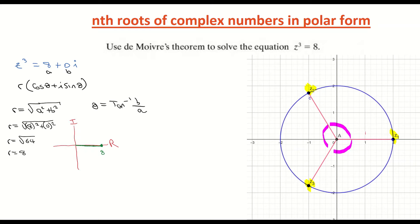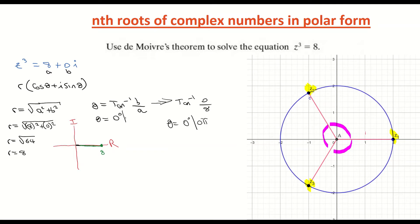From the picture, the angle between that point and the x-axis is 0 — it lies right on the real axis. Using the formula, θ = tan⁻¹(b/a) = tan⁻¹(0/8) = 0. So the argument is 0 degrees, which is 0π radians.